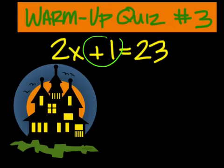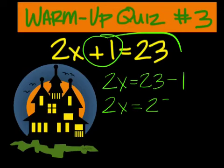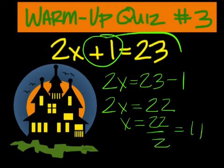You must move this to the right side and make it minus. So 2x equals 22. Divide 22 by 2 and get 11.